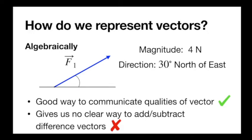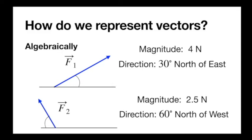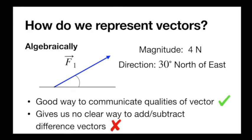This method is good for describing a vector quantitatively. If I tell you four newtons 30 degrees north of east, we can all easily visualize this vector. However, this method of describing a magnitude and direction separately does not lend itself well to solving problems numerically. I don't have a clear way to add these two vectors — I don't know how to add something 30 degrees north of east to something 60 degrees north of west easily.